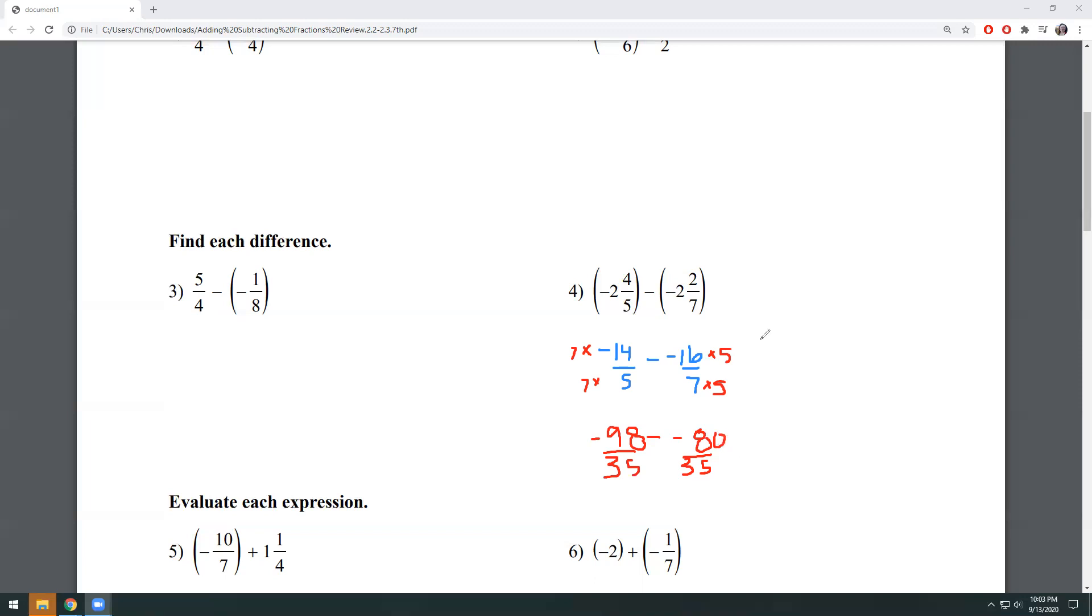Now that I have common denominators, I can move on to step three. We're going to use green for this where I either add or subtract my numerators. So that's what I'm going to do now. So I've got negative 98 minus negative 80. If you have a calculator, use it because it's going to make your life so much easier. If not, make sure you're KCOing this problem. And then you've got negative 98 plus 80.